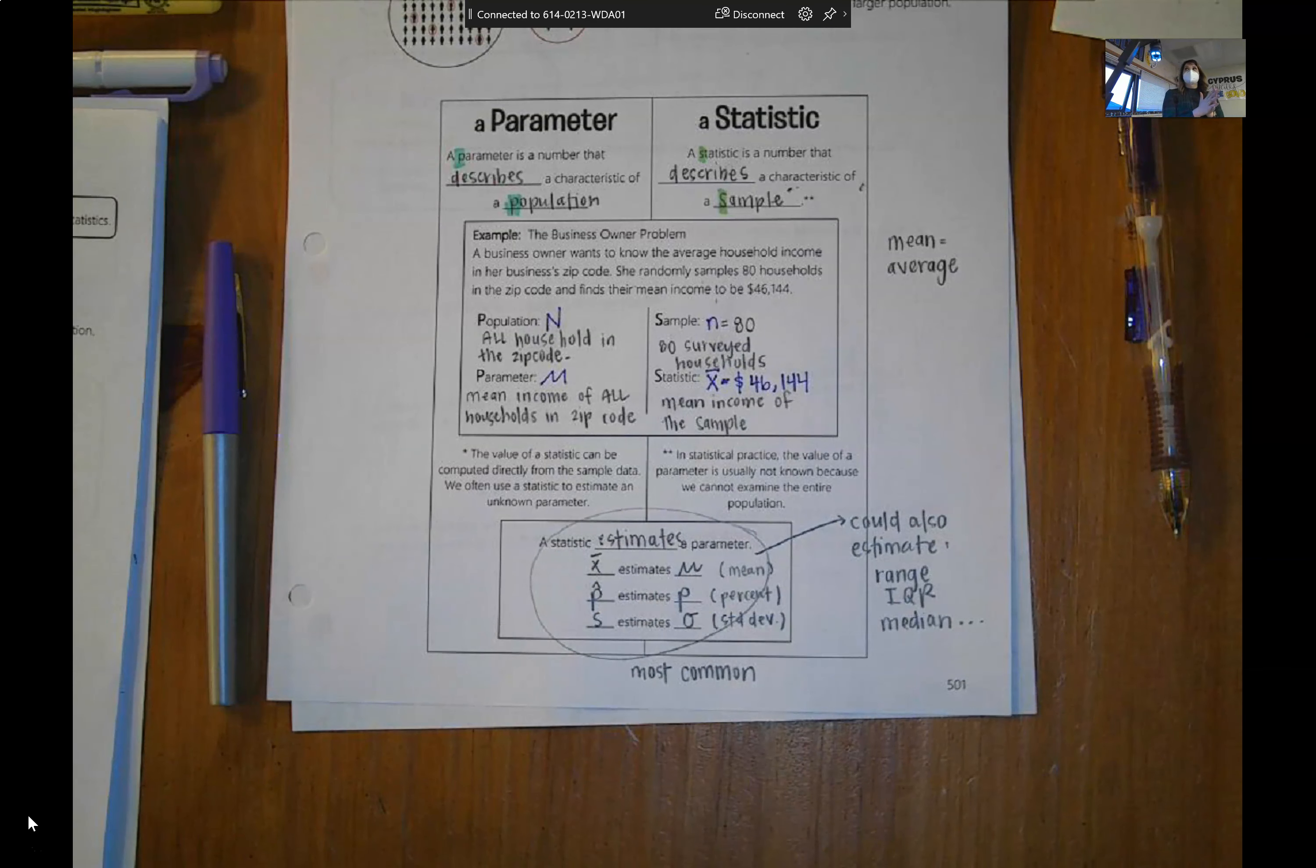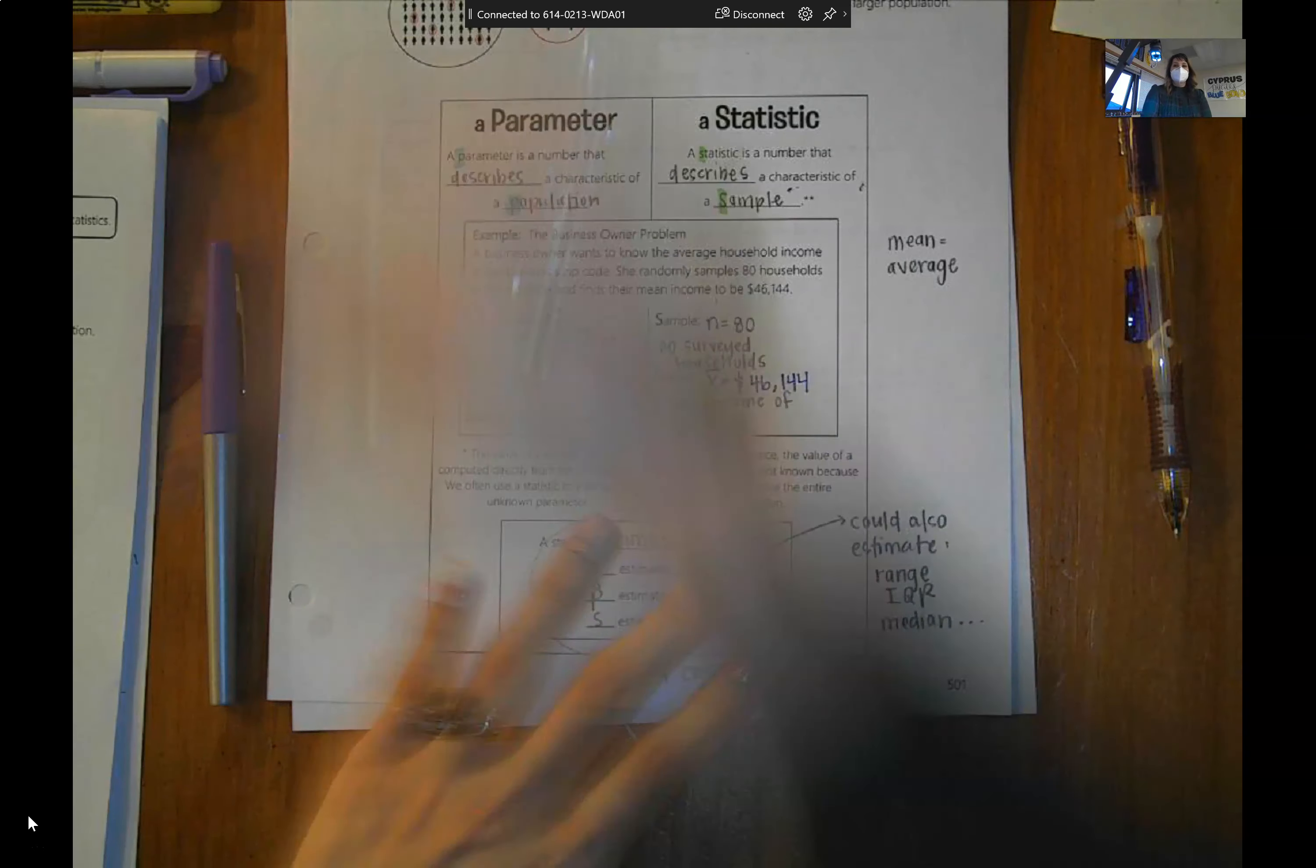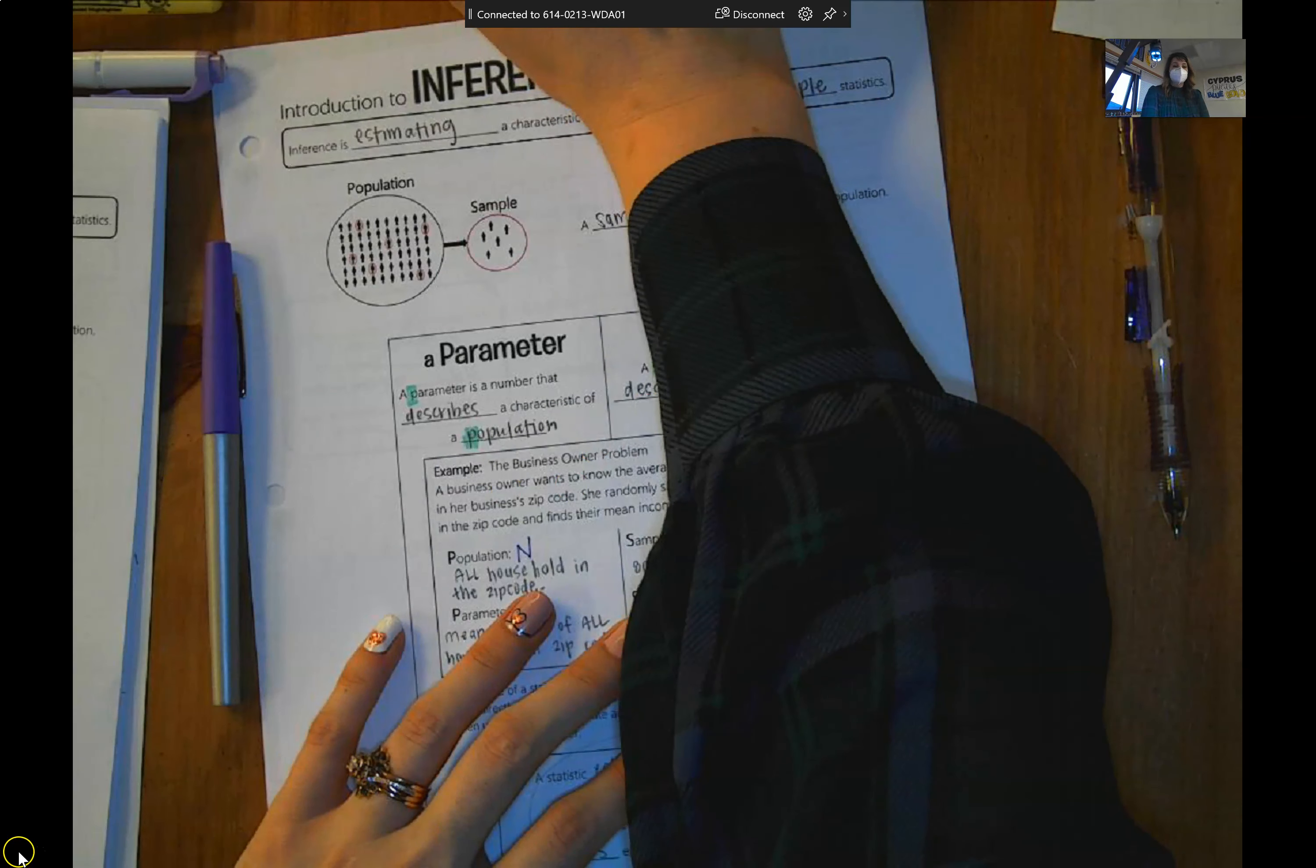So biggest takeaway from this page, we want to know things about a population. Easiest way to do that is to estimate it by taking a sample. You're feeling okay? Okay. So let's have you get in and do...